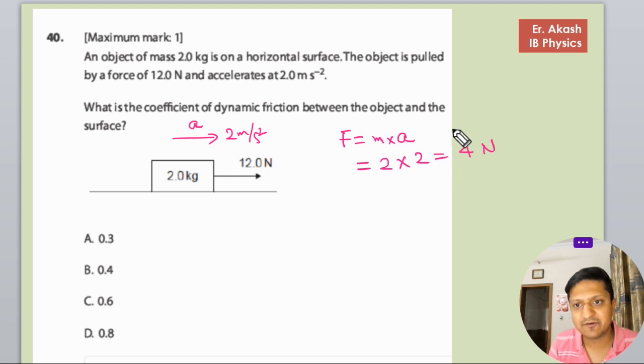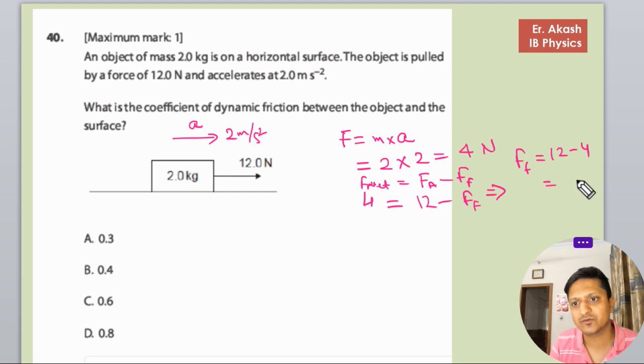The net force is 4 newton. F_net equals force applied minus frictional force. So 4 equals 12 minus frictional force. The frictional force will be 12 minus 4 equals 8 newton.